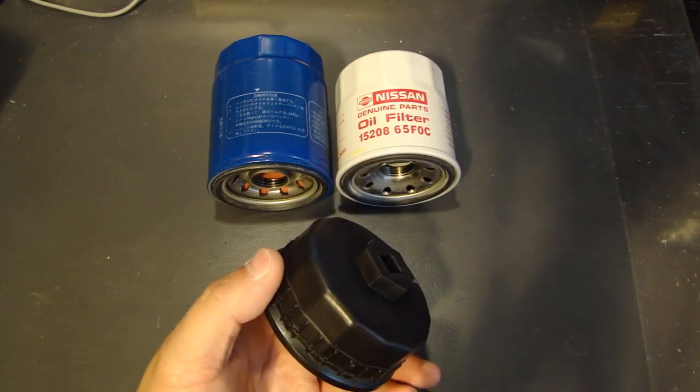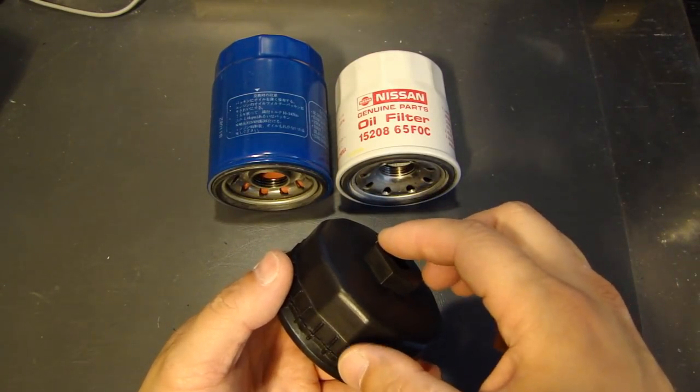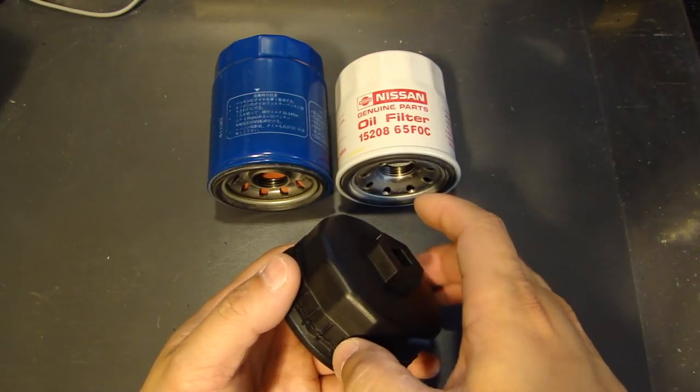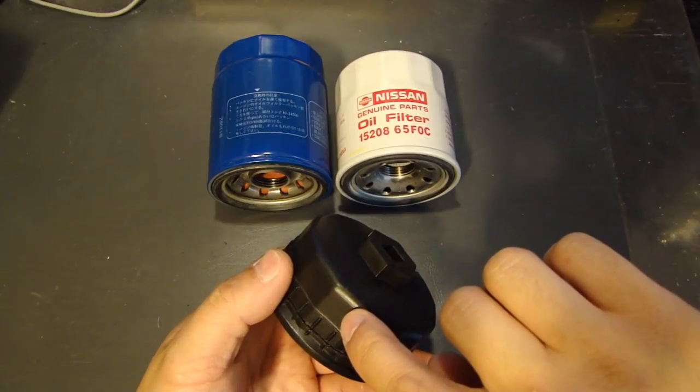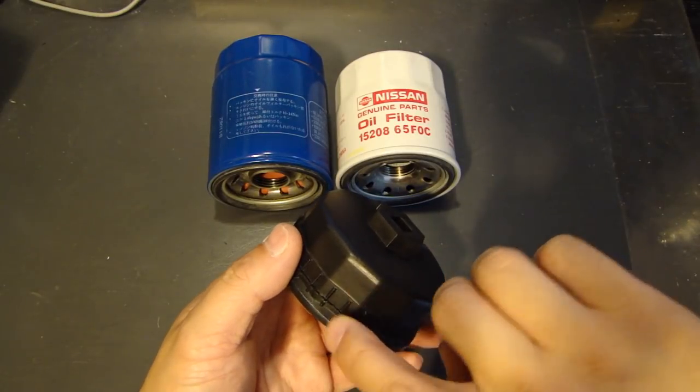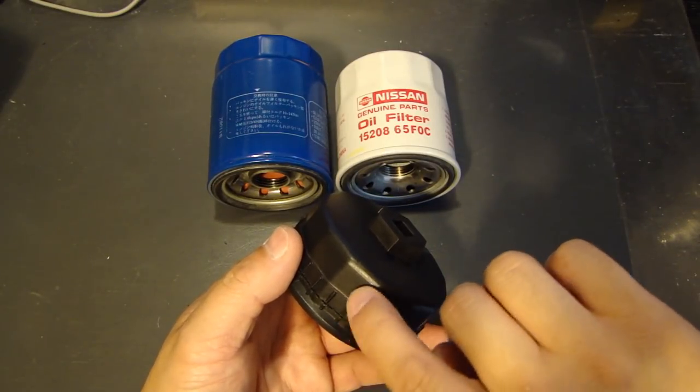And this one I have here is what they call a double step because the bottom here where I'm pointing to is 67 millimeter, and then the top part here is 65 millimeter. So it actually does two sizes of filters.